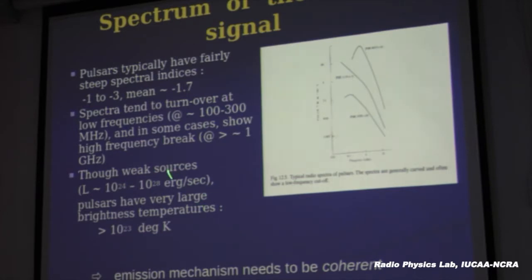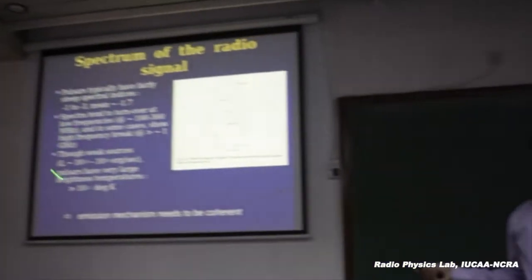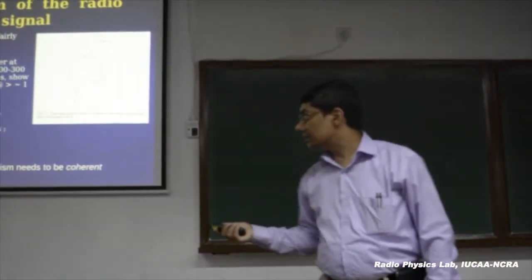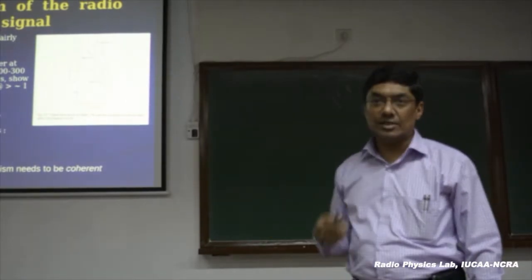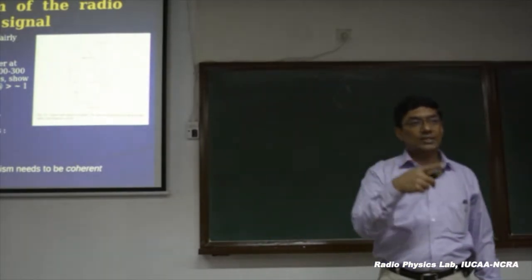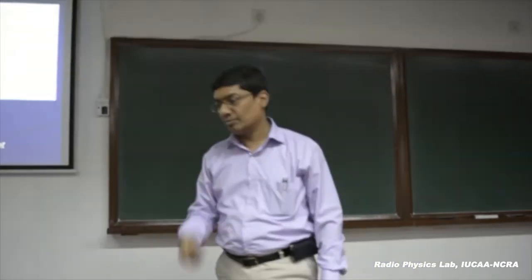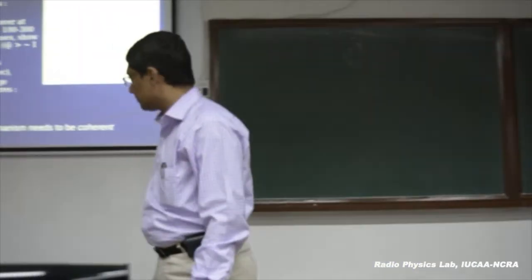If you take this energy and put it in that region of a thousand kilometers in size and ask what is the brightness temperature, you will find the brightness temperature is very large. That is what leads to the inference that it cannot be an incoherent emission mechanism — it has to be a coherent emission mechanism.